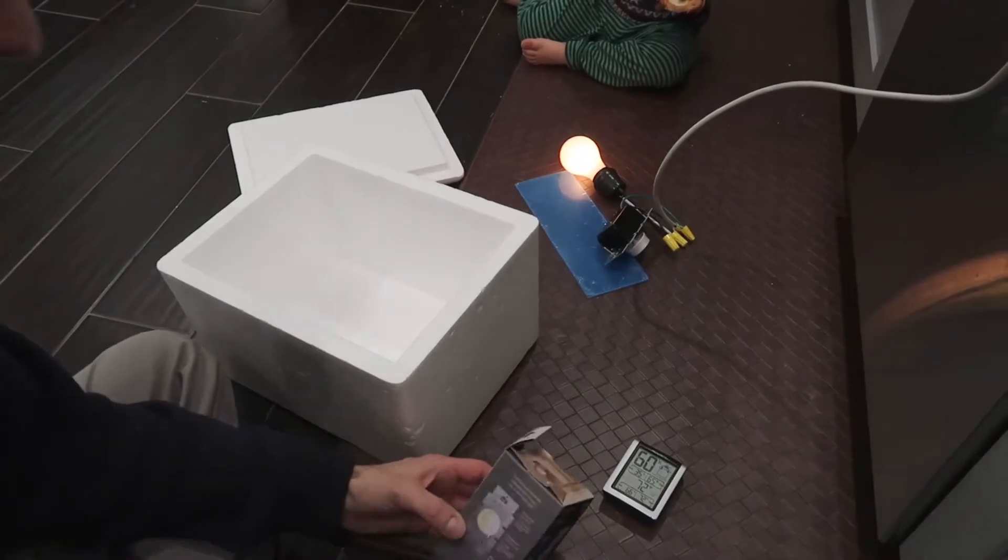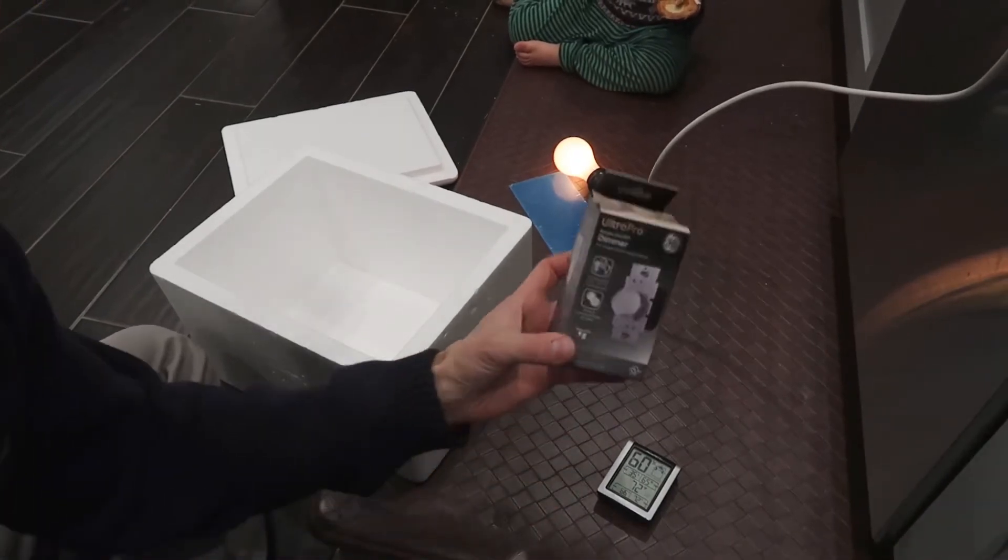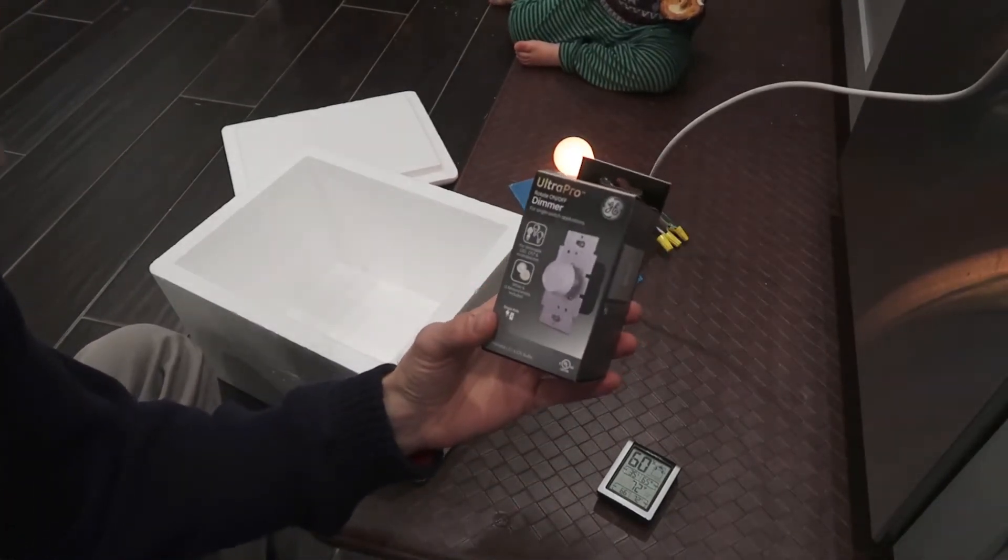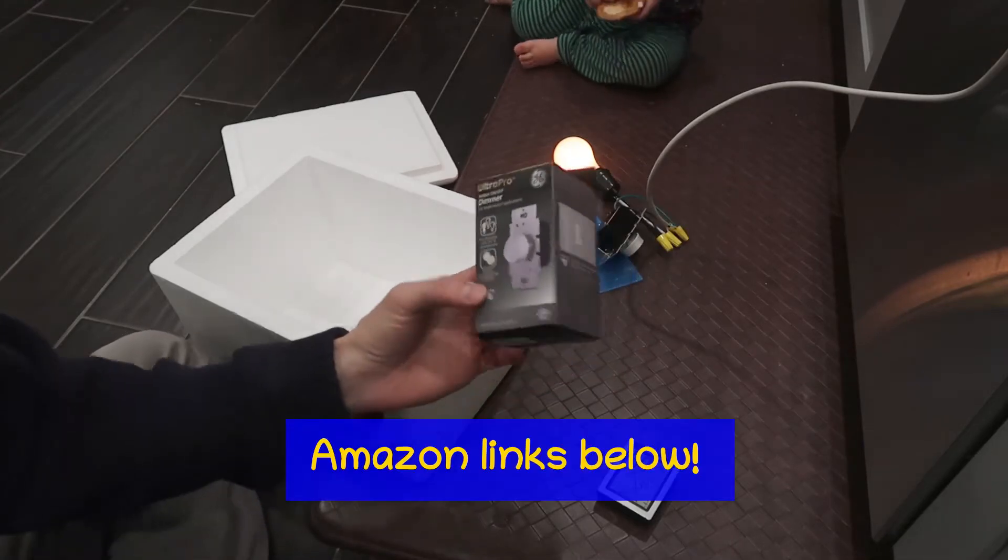All right, today we're going to make ourselves a little chicken incubator. First thing we did was buy a dimmer here, which you can get on Amazon through the link in the description below.